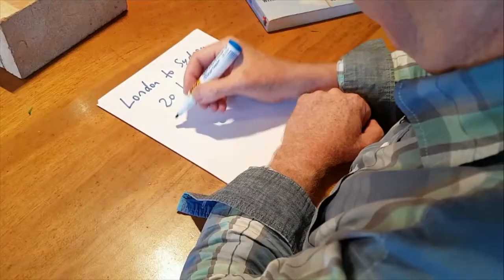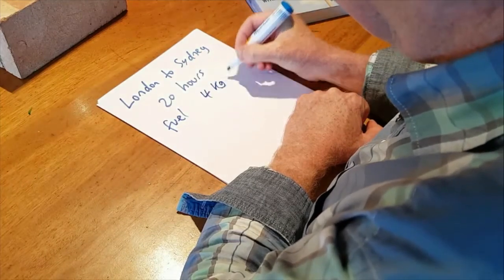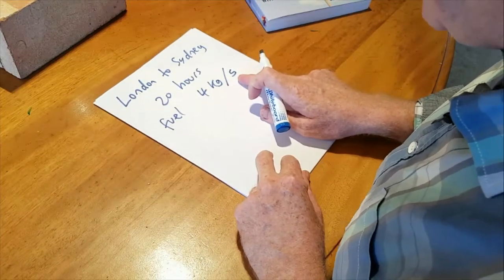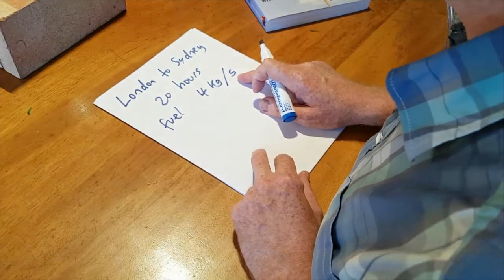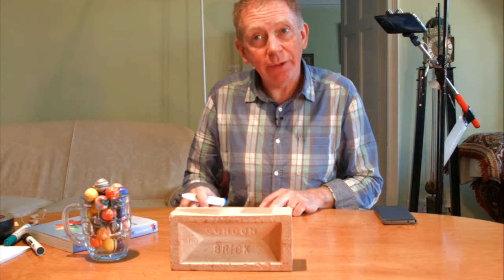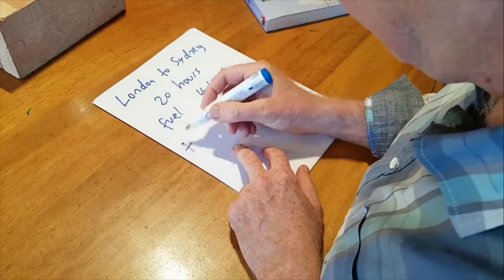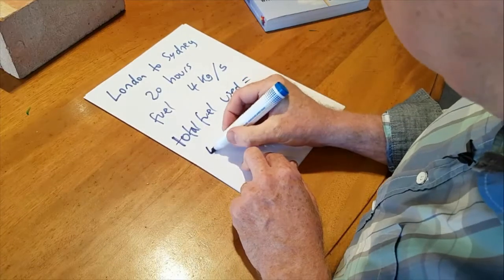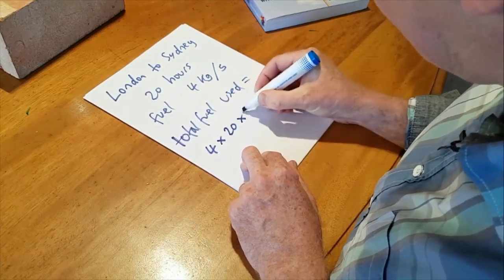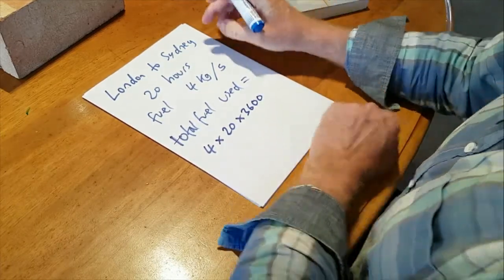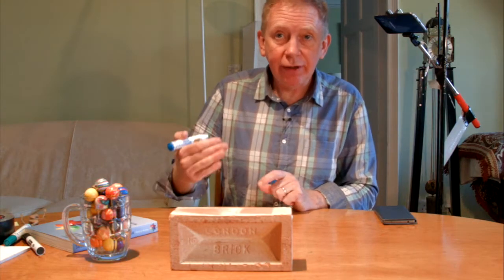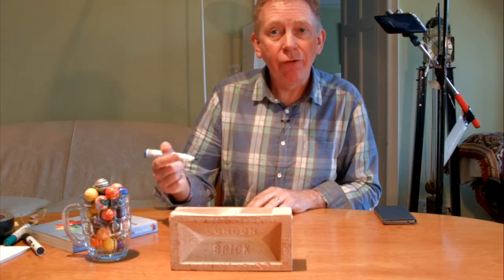You can check on the web that a 747 plane consumes fuel at a rate of about 4 kilograms per second. You have to multiply that by 20 hours and by 3600, because that's the number of seconds in an hour. Then to get CO2, you multiply by 3, because you get about 3 kilograms of CO2 emitted for every kilogram of fuel.